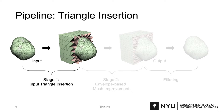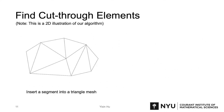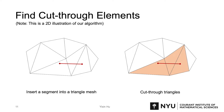In the first stage, triangle insertion, we first build a background mesh, which is the TET mesh of a box a bit larger than the object, and then we insert input triangles into the background mesh in a random order. During the insertion, we always maintain a valid tetrahedral mesh. For easier understanding, I will explain the insertion in 2D — that would be inserting a segment into a triangle mesh. On the left is a triangle mesh. We want to insert the segment highlighted in red into the mesh. The first step is to find all cut-through triangles of the segment, marked in orange. Here we use exact predicates for checking intersections, which ensures that no cut-through triangles would be missed.